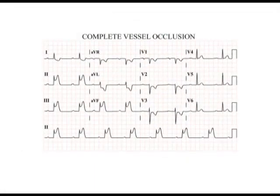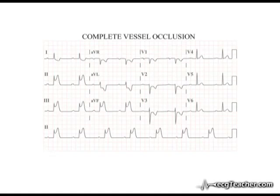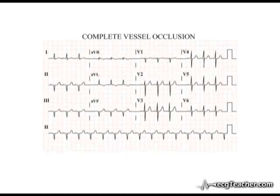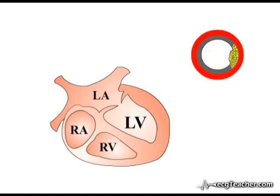Complete occlusion of a coronary arterial vessel renders the entire thickness of the myocardial wall it supplies at risk of infarction, and manifests as ST elevation on the ECG. In the absence of treatment, the process may progress to complete transmural infarction of the area involved, with development of pathological Q waves.